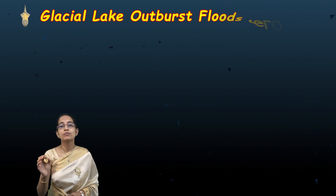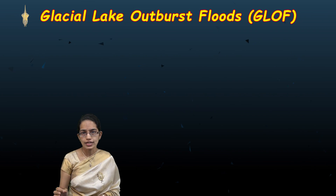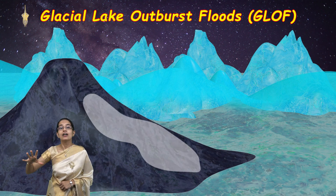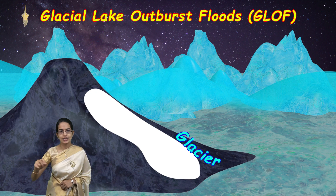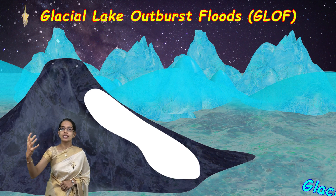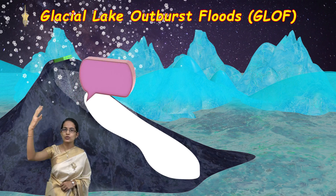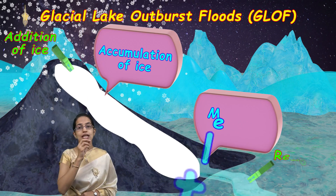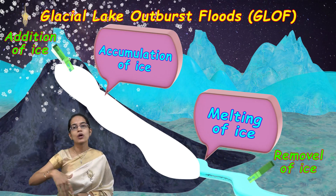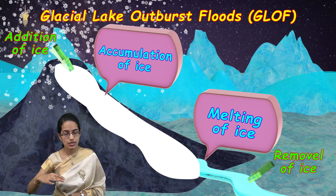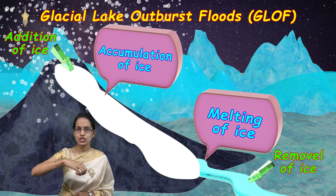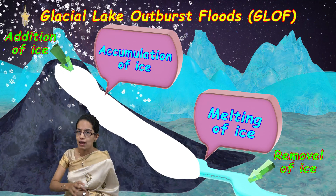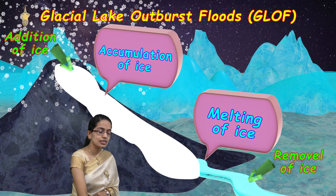Let's understand glacier lake outburst floods, which is GLOF. Before we begin, there are various glaciers where snow accumulates. There is also the process of ablation, which is the melting of ice. This is a continuous process where you have addition of ice and removal of ice.